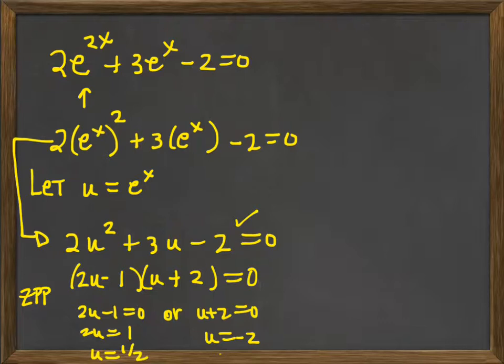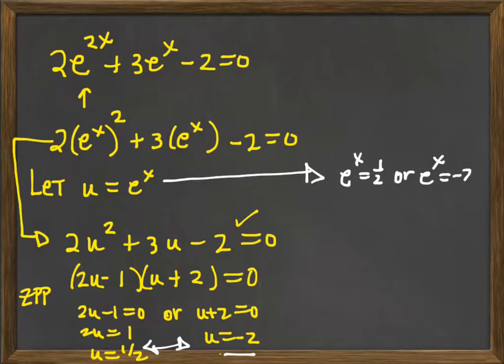Remember I was ultimately trying to solve for x. So let's go back up and we've discovered what our u is equal to, so let's now solve for x. So since u is equal to e to the x and one half, that means e to the x is equal to one half or e to the x equals negative 2.